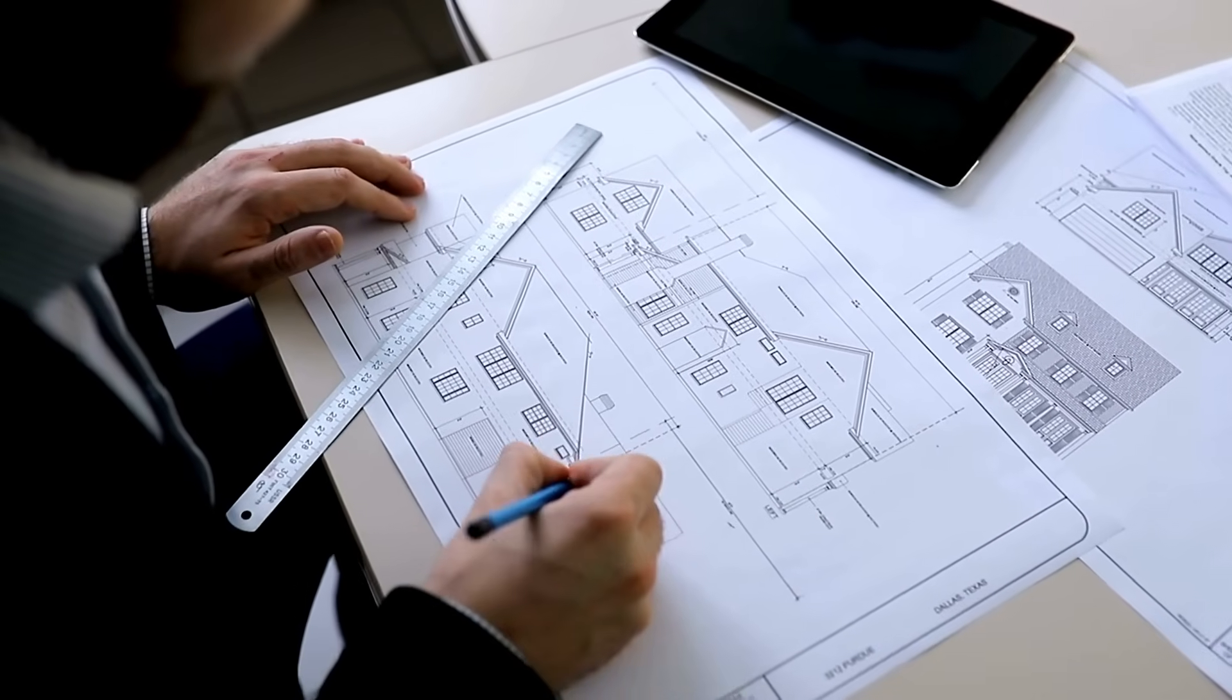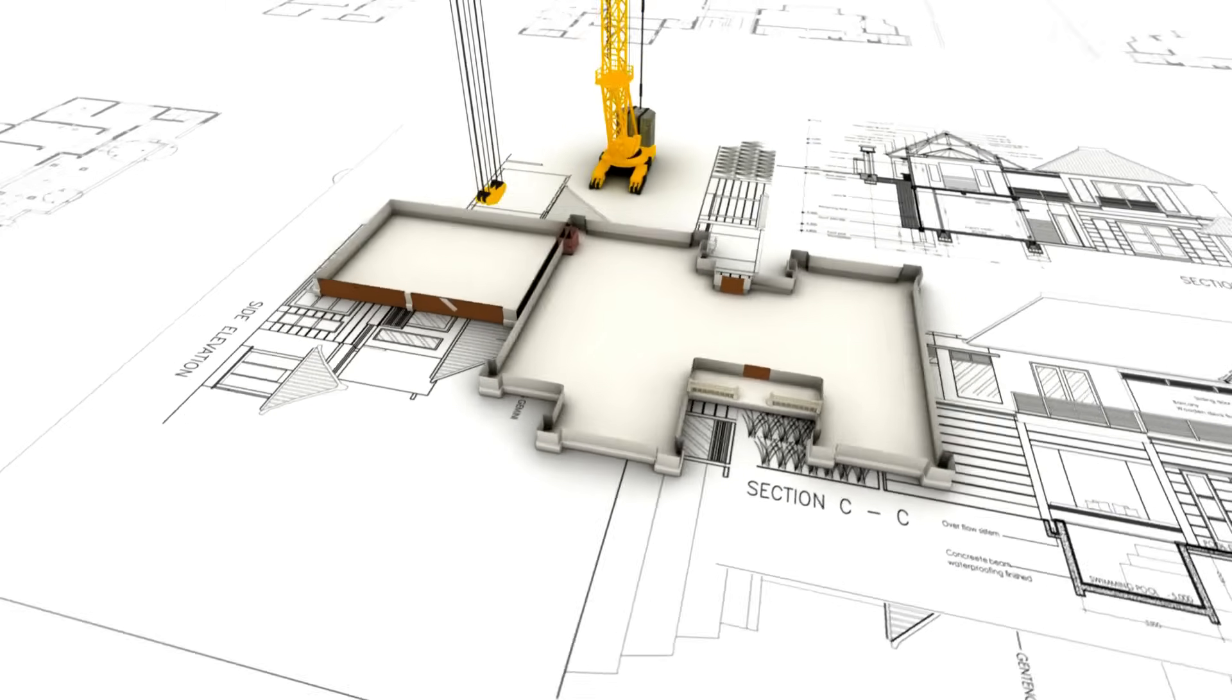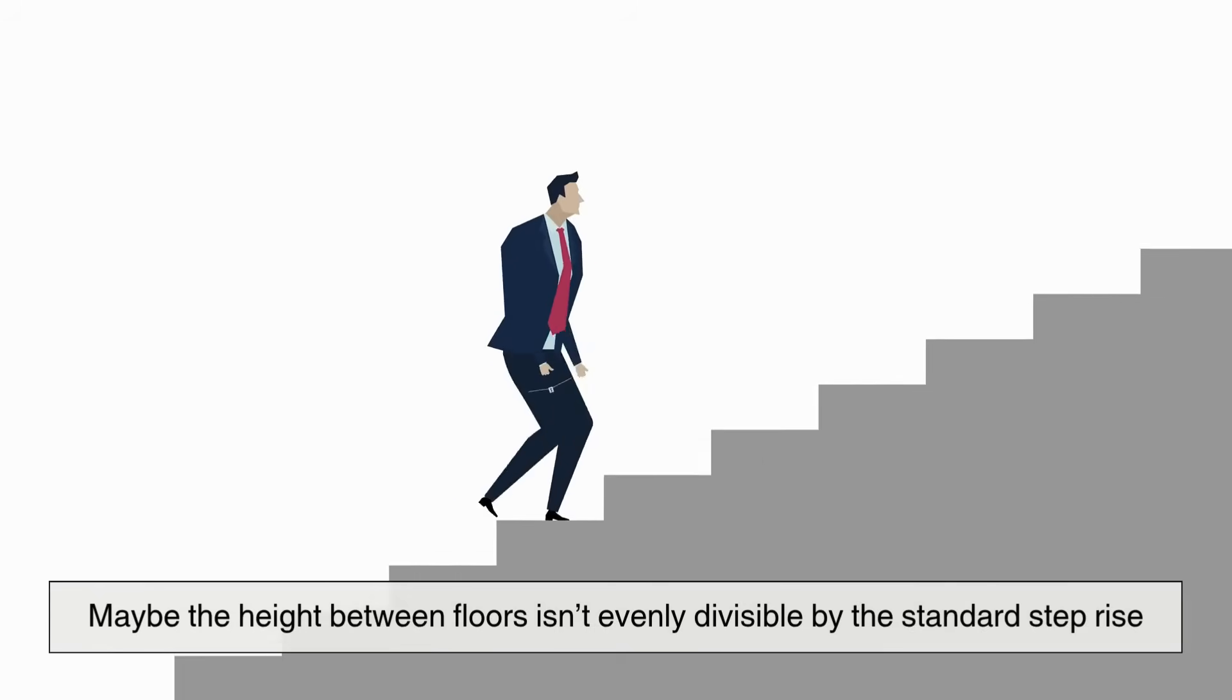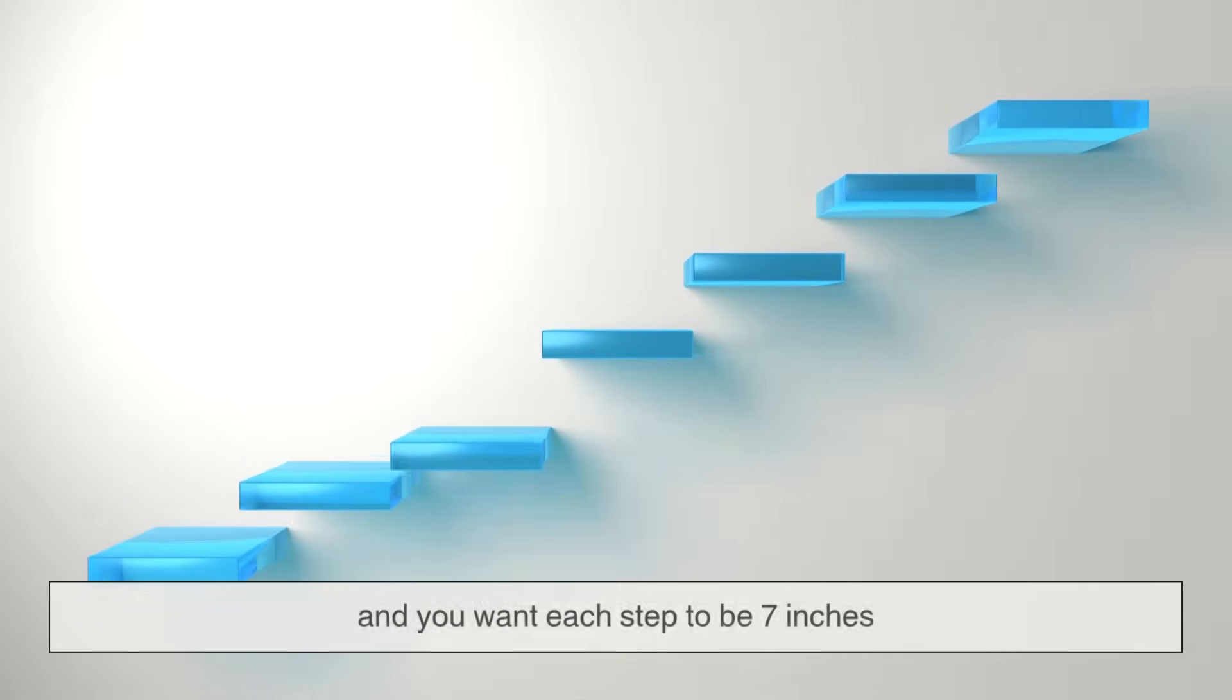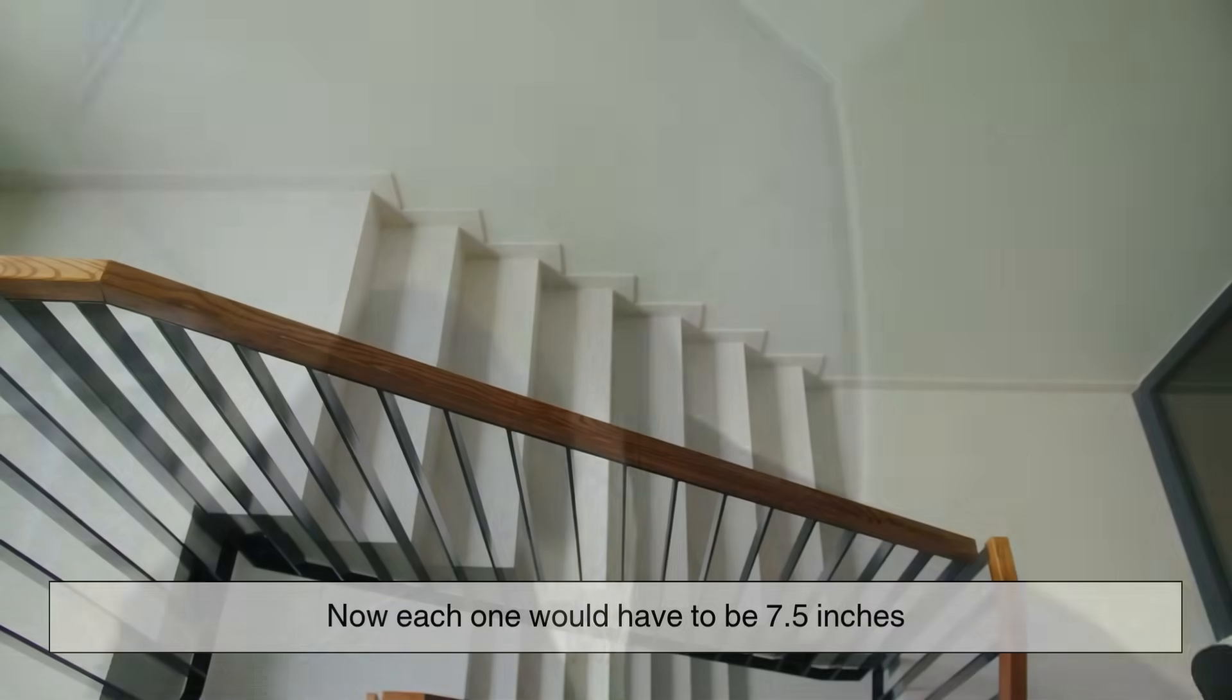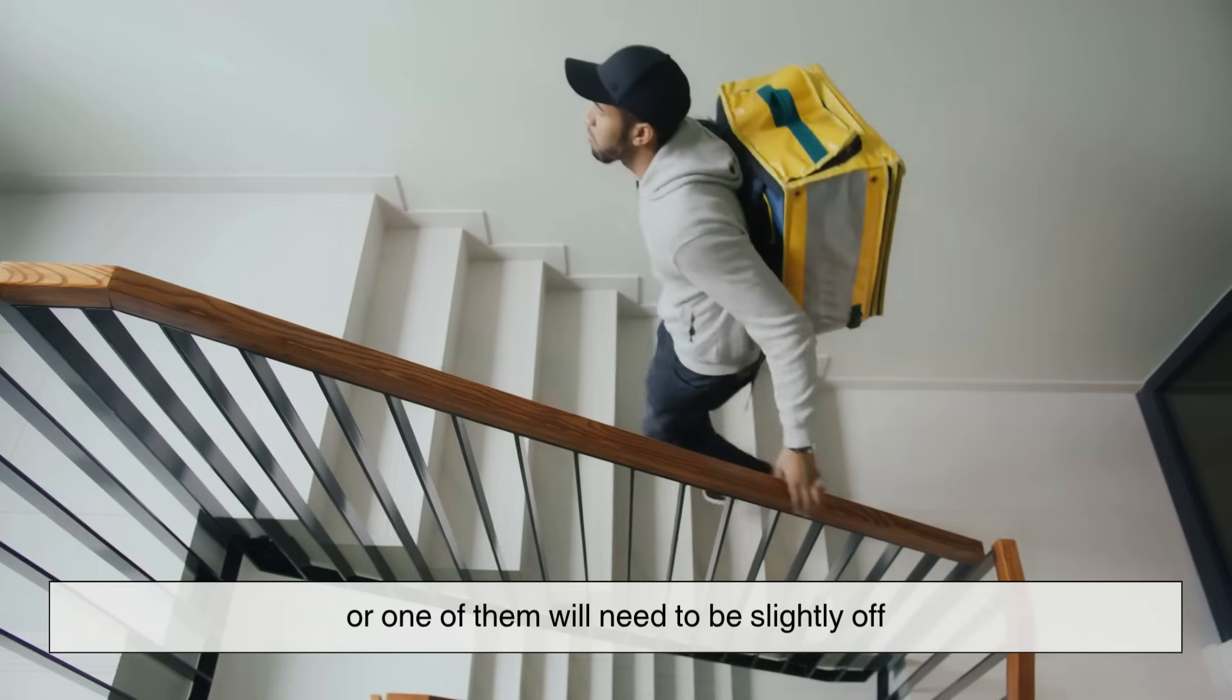There's also a more subtle factor: building design constraints. Sometimes the available space forces designers to make tricky choices. Maybe the height between floors isn't evenly divisible by the standard step rise. Let's say the total floor-to-floor height is 105 inches, and you want each step to be 7 inches. That gives you 15 perfect steps. But what if the space only allows for 14 steps? Now, each one would have to be 7.5 inches, or one of them will need to be slightly off.